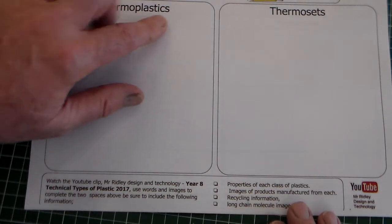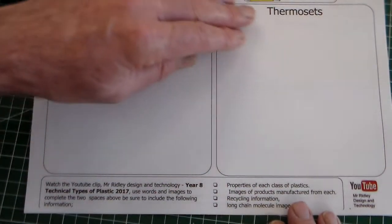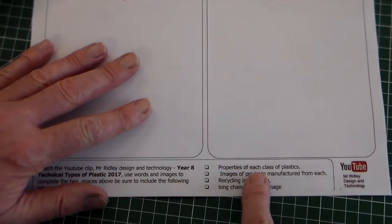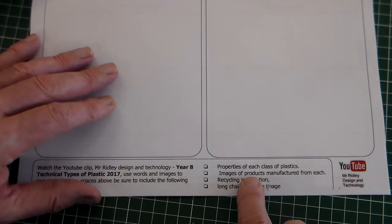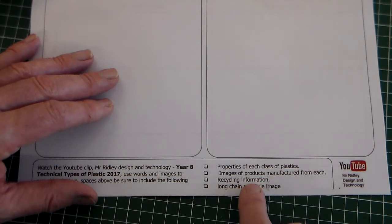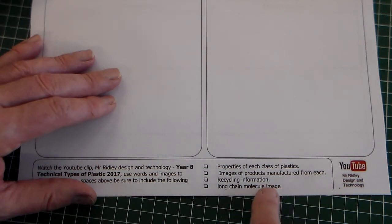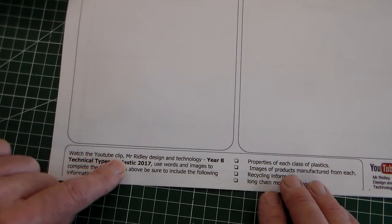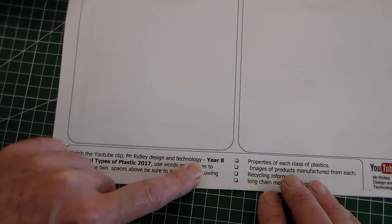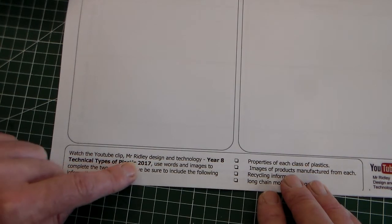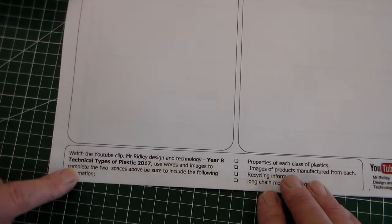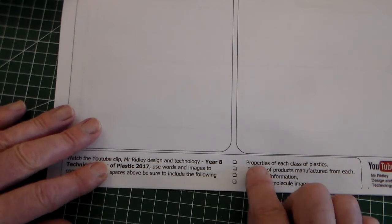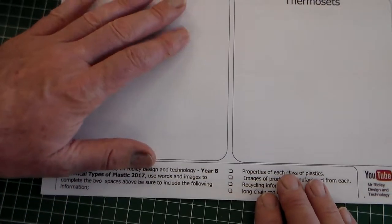What you're going to do is create a poster here outlining these two different types of plastic. You need to add the properties of each type of plastic, images of products made from each type of plastic, some recycling information and perhaps the long chain molecule image. To do this you're going to need to watch the YouTube clip in Mr Ridley's Design and Technology Year 8 Technical Types of Plastic. Use words and images to complete the two spaces above and be sure to include the following information.